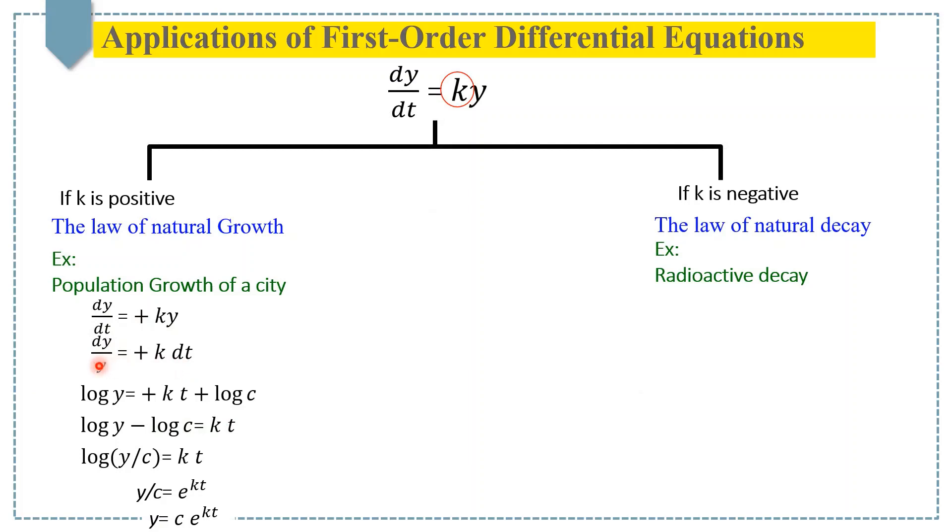Now taking integration of both sides, dy/y becomes log y = kt plus some constant. We write that constant as log c. Keeping log c on the left side and taking the difference, we get log(y) - log(c) = log(y/c) = kt.